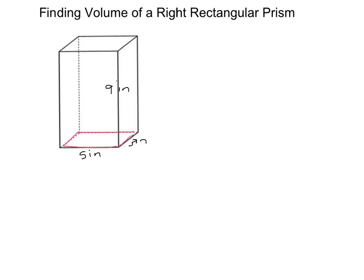And I could redraw this rectangle over here if I want to, just so I can find the area of the base side. So the base of my prism, the rectangle that creates the base, has a width of three and a length of five for a total area of fifteen square inches.